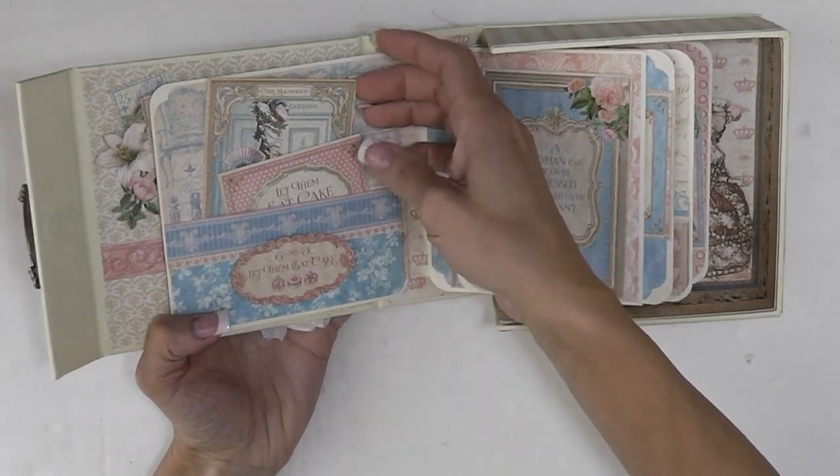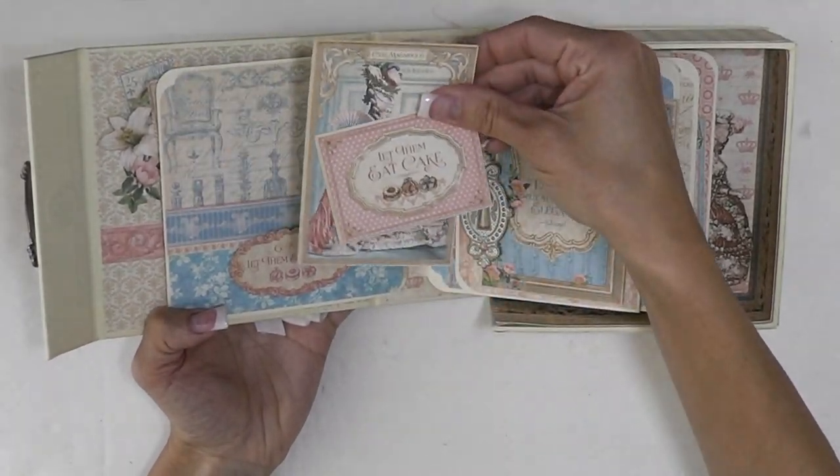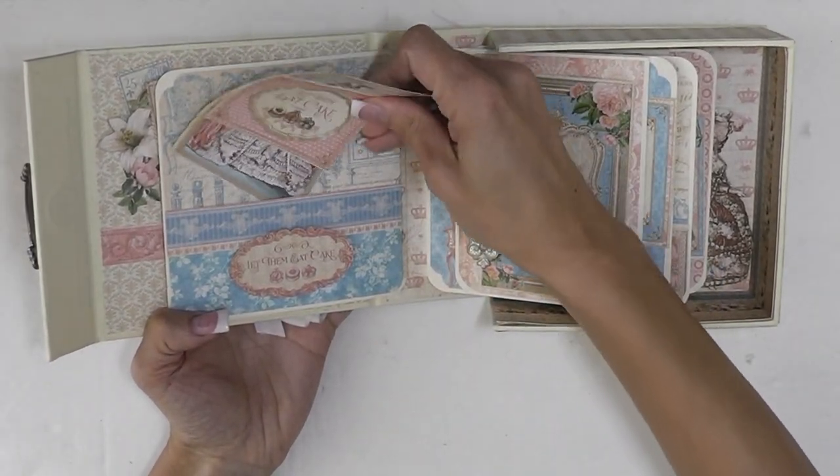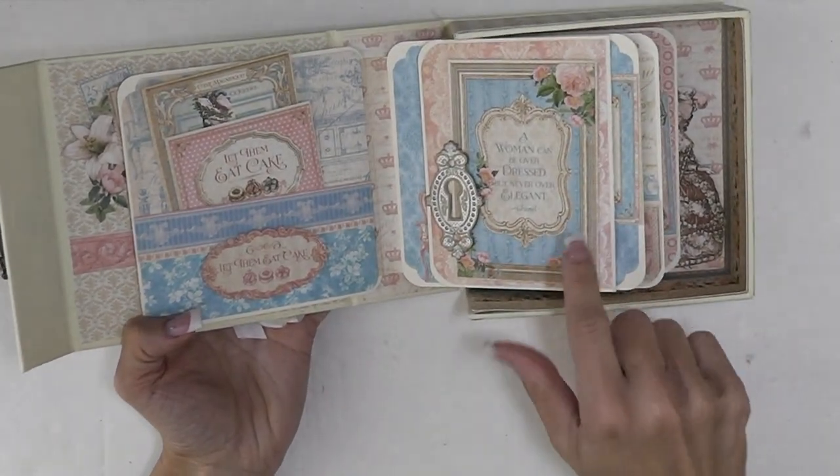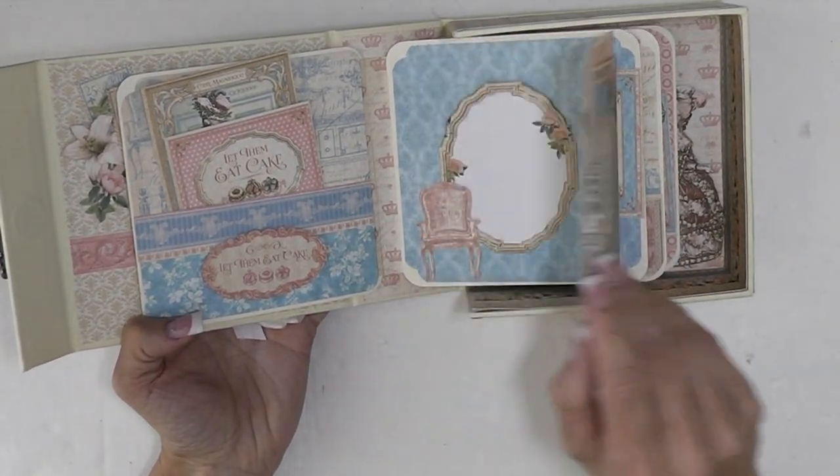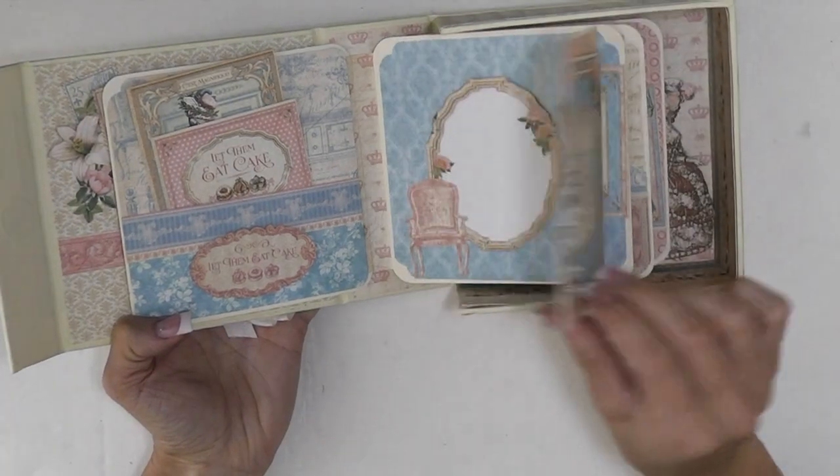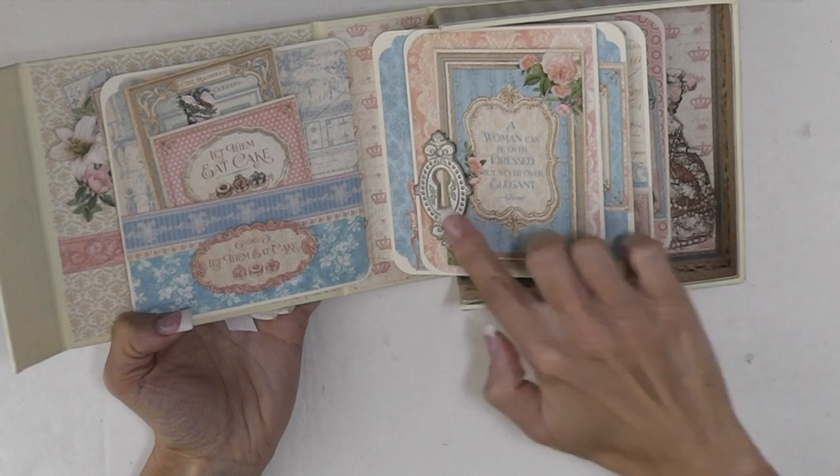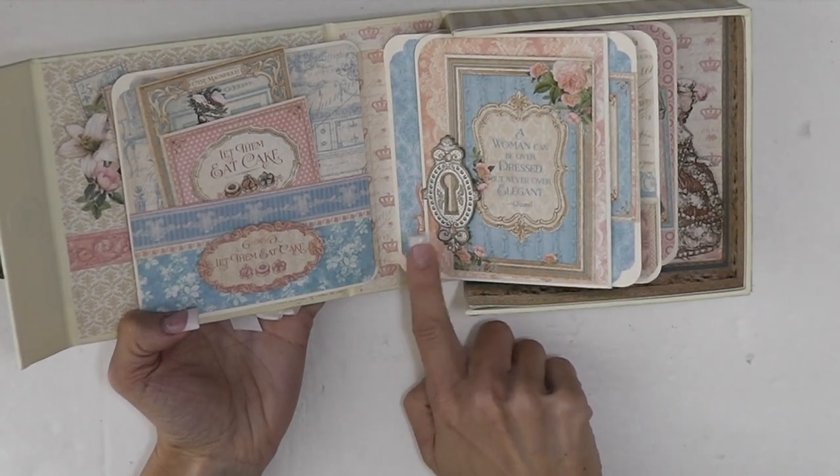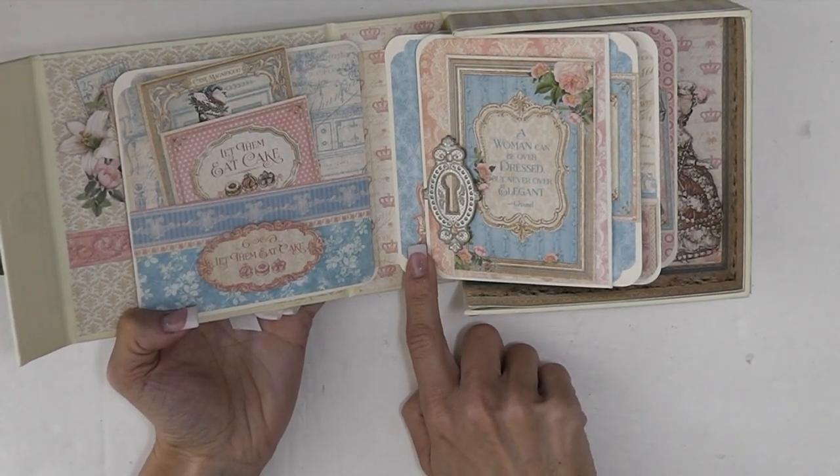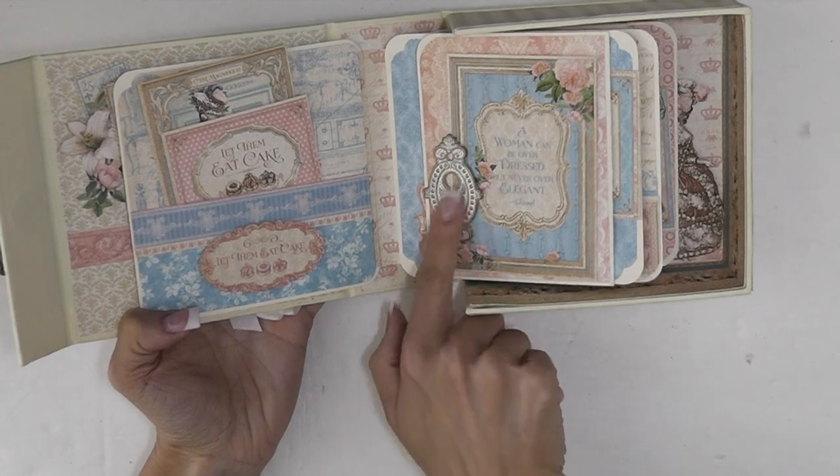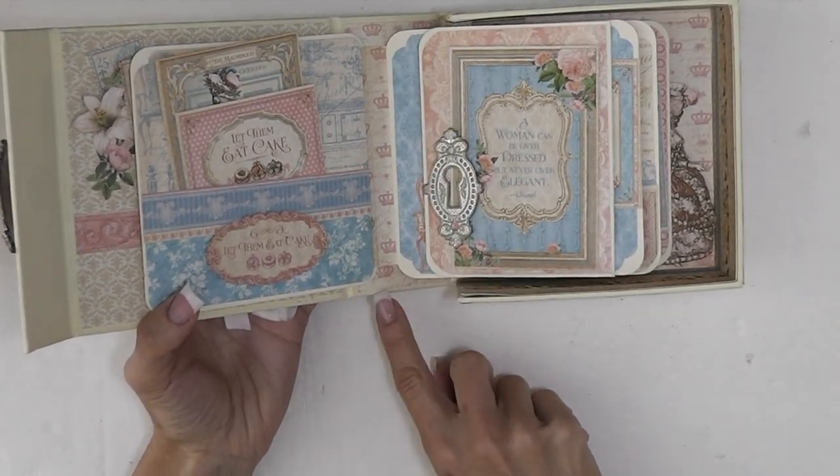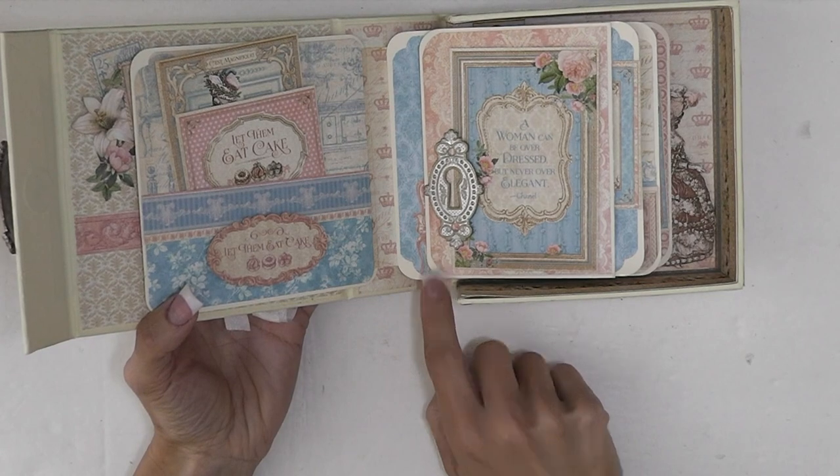We have a little pocket here with the cutouts from the 8x8 paper pad. And this is what I did with the extra tags that came with the box. I made a little flap here. And so here on the front I used a keyhole. I didn't use any magnets on the pages. And the keyholes add a nice little embellishment as well as a little bit of weight to the flap so it stays closed really well.